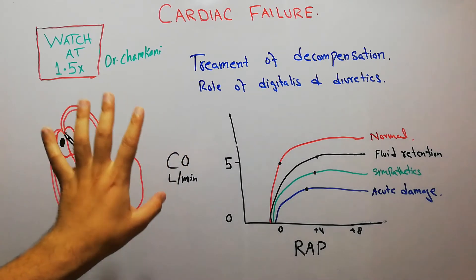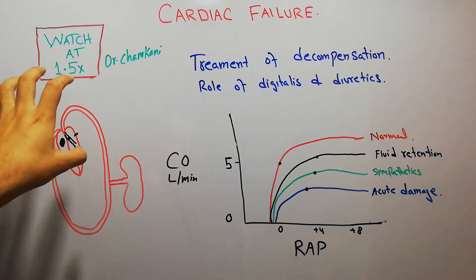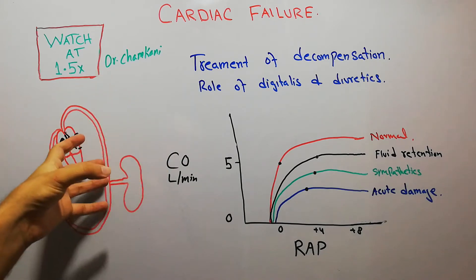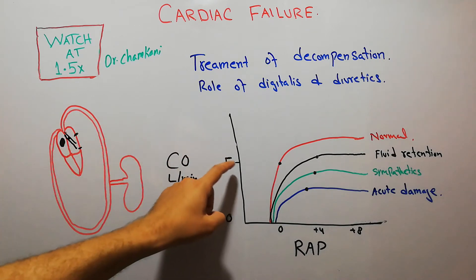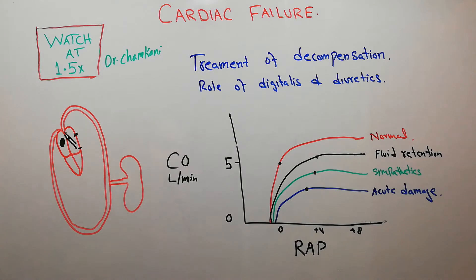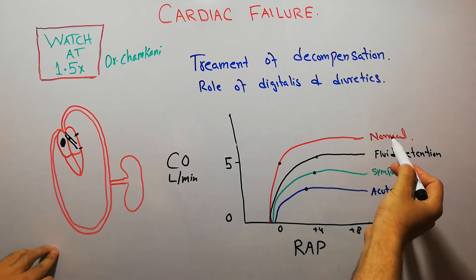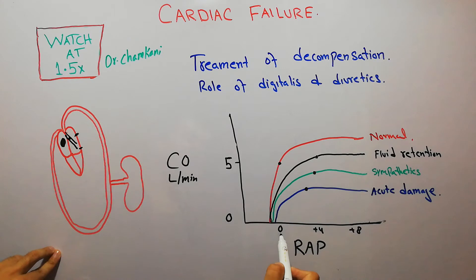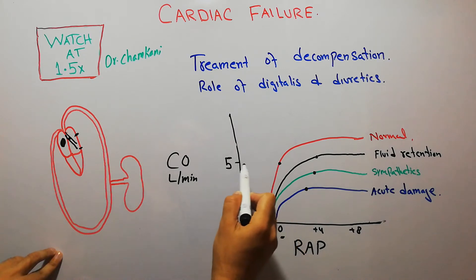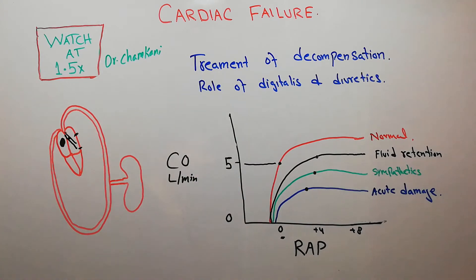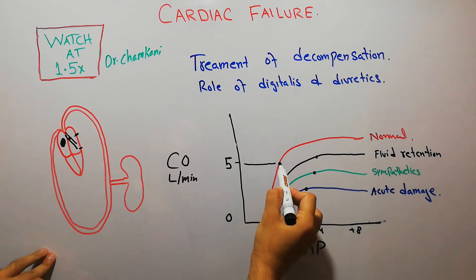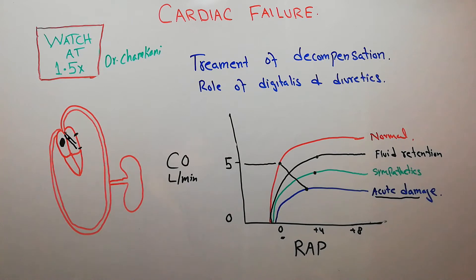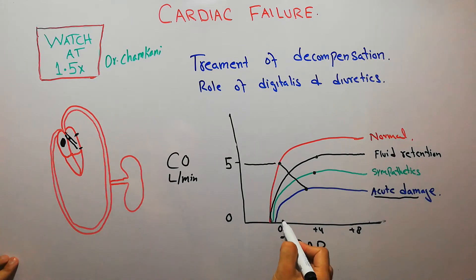Once this acute damage has occurred, it leads to a decrease in the functioning of the heart and the cardiac output falls directly. On the graph, the normal heart pumps five liters per minute with a right atrial pressure of zero. Due to acute damage, the cardiac output falls from the normal point to what we have labeled as 'acute damage,' where cardiac output has decreased and the right atrial pressure has slightly increased.